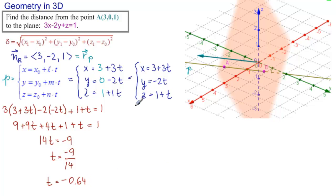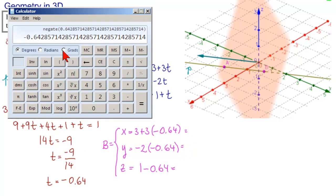So that's t. Now we substitute t into here to get the coordinates of B. So here comes B. B equals, and we have x equals 3 plus 3 times minus 0.64, and y equals minus 2 times minus 0.64, and z equals 1 minus 0.64. Let's get our calculator for these.